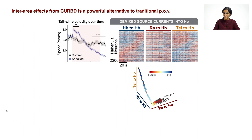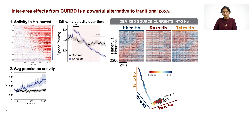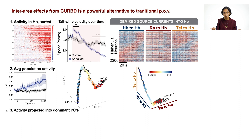This inter-area effect derived by looking at the current-based decomposition view is a powerful alternative to the traditional point of view. We can naturally correlate early changes — the current rotations in the raphe-to-habenula subspace — with the behavior, or the enhancement of the tail whips at the onset of the behavioral stress. It's only later that passive coping may be mediated by these other two source currents. This point of view is not revealed when you look at the raw activity of the habenula, even when you sort it as a function of time or average over the population activity — or indeed take the raw activity and project it into the state space view. The unexpected timing effect was only revealed by current-based decomposition.